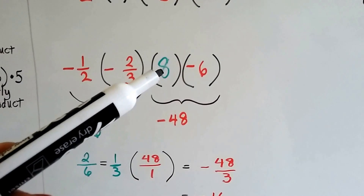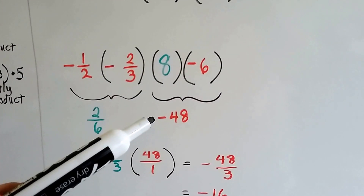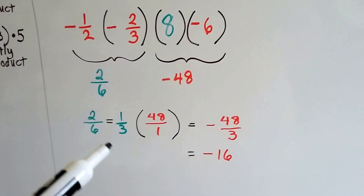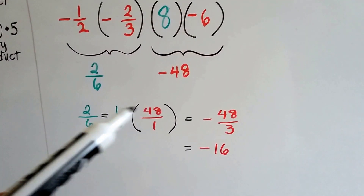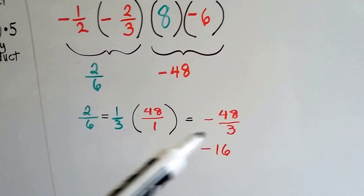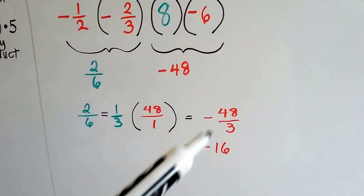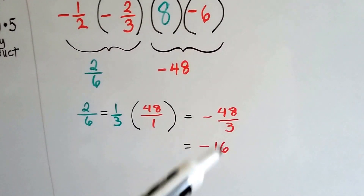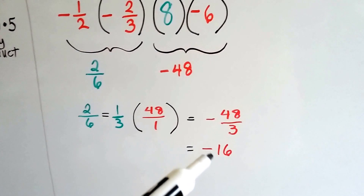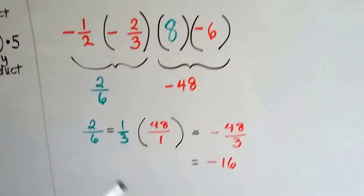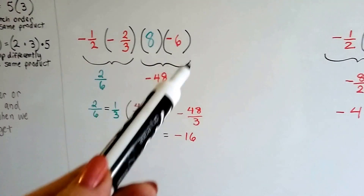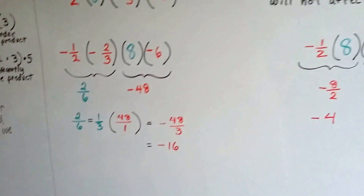We can multiply the positive 8 and the negative 6 and get a negative 48 because they have unlike signs. When we multiply these, we get 1 times 48 is 48 over 3 times 1 is 3, and because they're unlike signs, it's negative. We simplify it — 3 goes into 48 sixteen times — so we've got a negative 16.